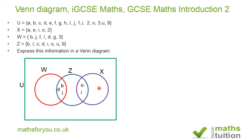Now I look at elements that are peculiar only to X. Those are: 2, A, and E. Counting them I get five elements, which matches the five elements in set X — so that's correct.